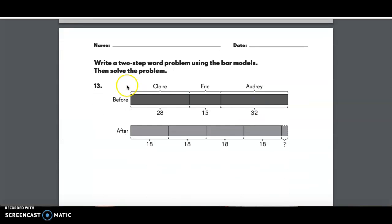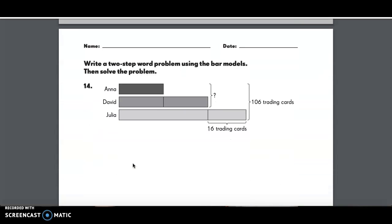Number 13 is the same. Write a two-step word problem using the bar models. Then solve the problem. Number 14, write a two-step word problem using the bar models. Then solve the problem. And that is all.